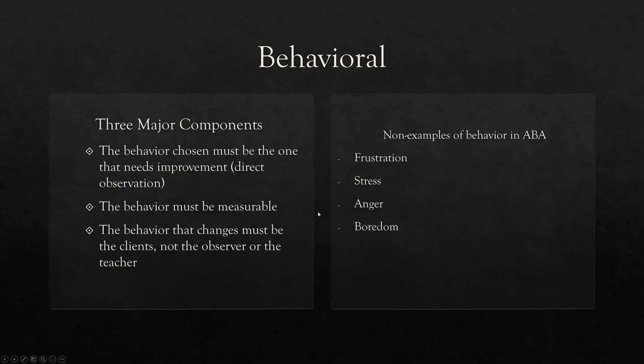The first dimension is Behavioral — probably the most obvious one. We are behavior analysts, behavior technicians; we're studying behavior. There are three major components to consider when choosing behaviors. First, the behavior chosen must be the one that needs improvement, meaning we need to directly observe the behavior of interest. If we're working in a classroom setting, don't just interview a teacher or peers and start choosing behaviors that way. Focus on what we can observe — direct observation.